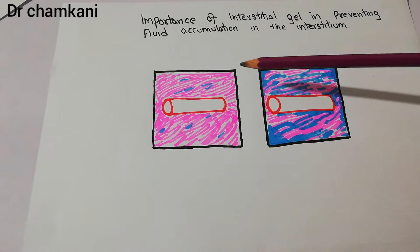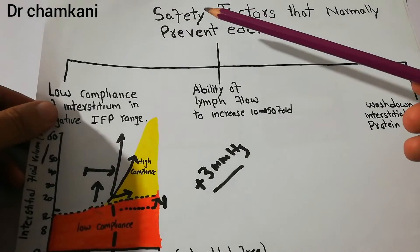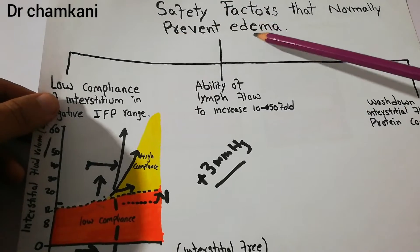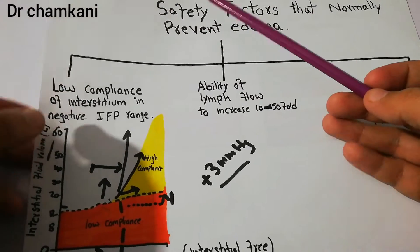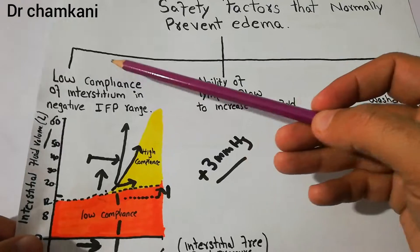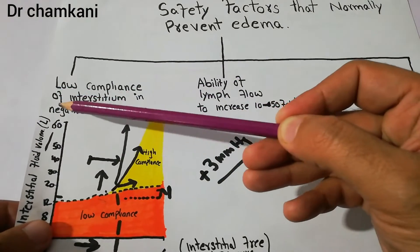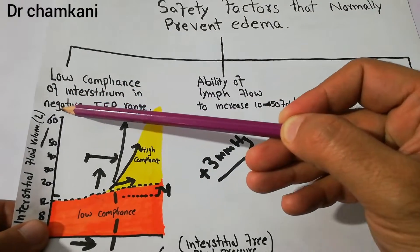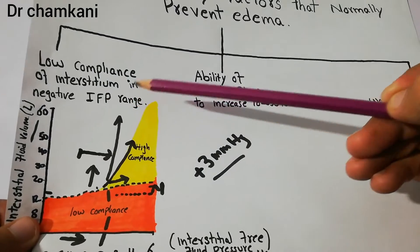This lecture is basically the continuation of our previous lecture, which is about the safety factors that normally prevent edema. In our previous lecture, we discussed in detail the first safety factor, which is the low compliance of the interstitium in the negative interstitial fluid pressure range.